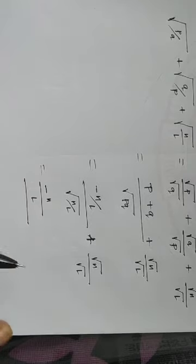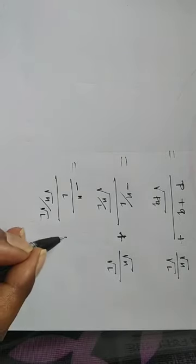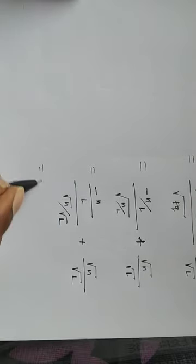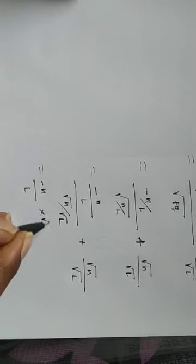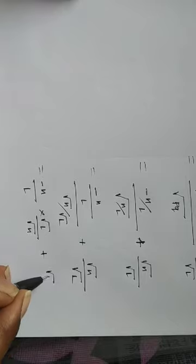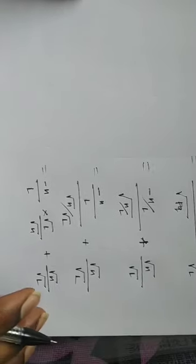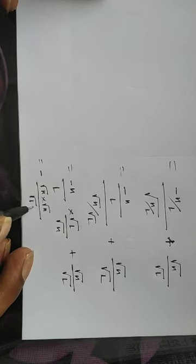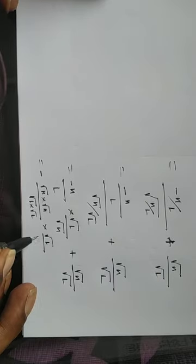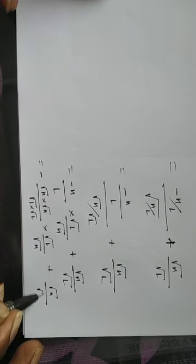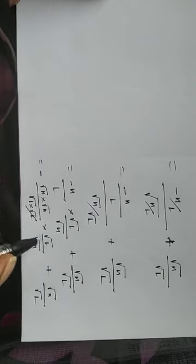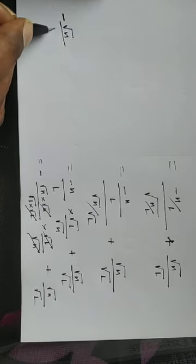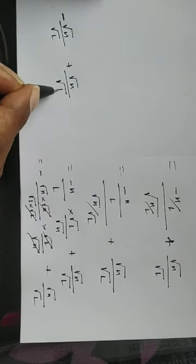So we get minus N by L. Writing root N by root L plus root N by root L. Here we have minus N by L — if we take root L, we get root N by root L plus root N by root L. So root N into root N by root L into root L, giving minus root N by root L. So it is a minus term and a plus term.